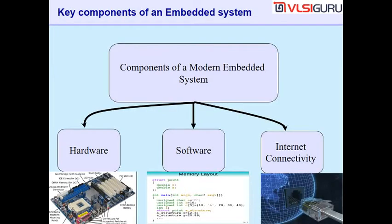The key components of an embedded computer or embedded system are similar to a desktop or laptop. Embedded systems also have three main parts: the hardware with the CPU and all other parts, the software, and the internet. In that respect, embedded computers do not differ much from regular desktops and laptops.